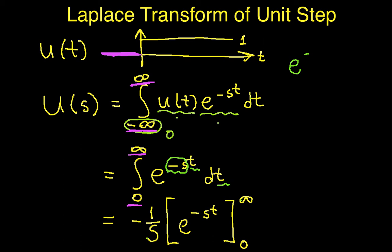Let's look at what e to the minus st evaluated at t equals 0 is. I plug in 0 for t — this is e to the 0, because 0 times s is 0, which is equal to 1. So that lower limit evaluation gives us 1.